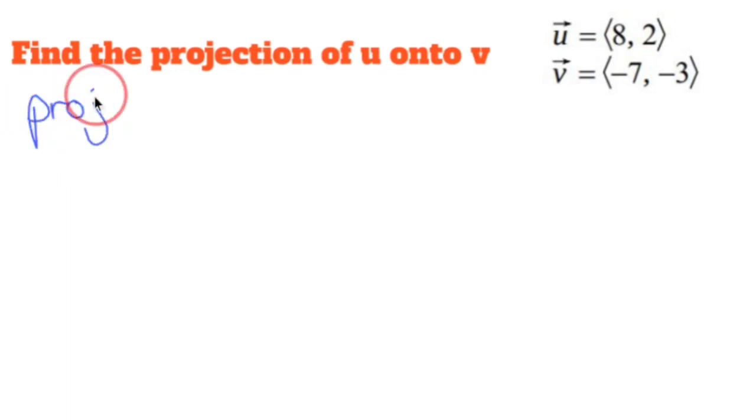Projection of U onto V is going to be the dot product of U and V over the magnitude of V, square that, and then multiply the whole thing by V.